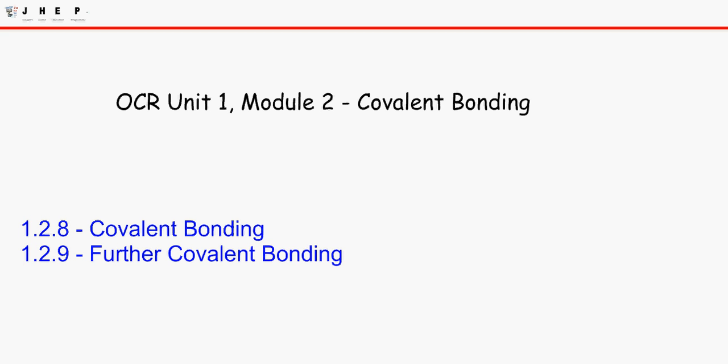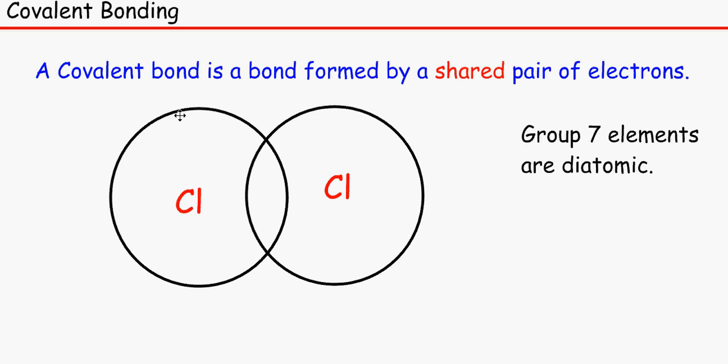Hello and welcome to J-Hub's lesson on Covalent Bonding. First of all, a Covalent Bond is a bond formed by a shared pair of electrons. You need to remember the shared bit. Most people forget about it and then they lose the mark.